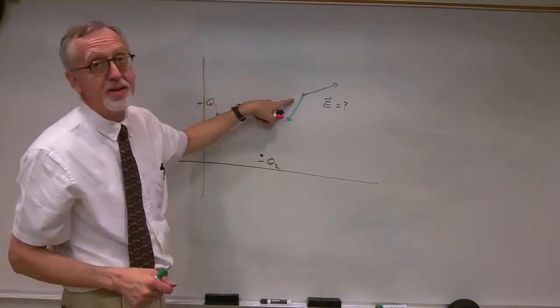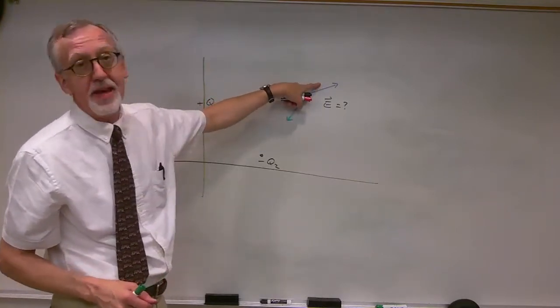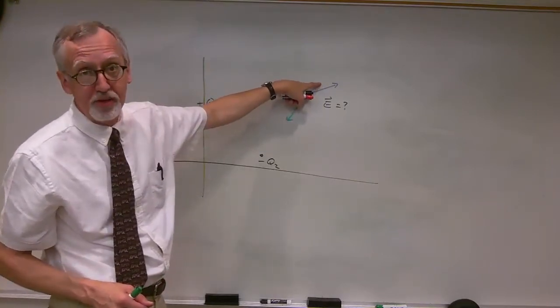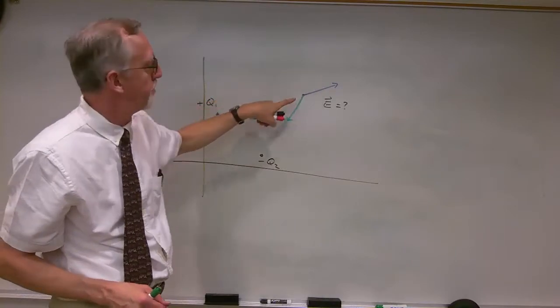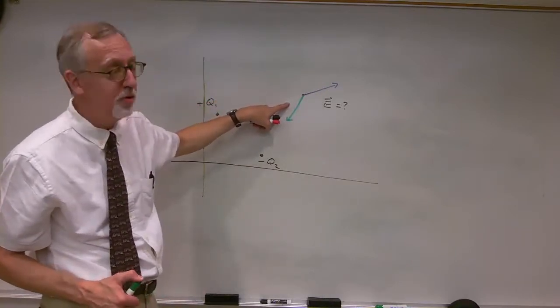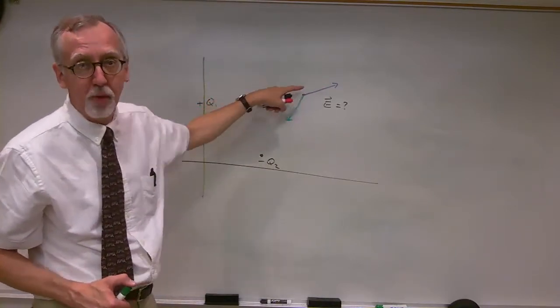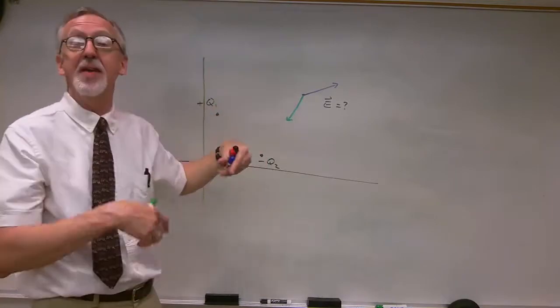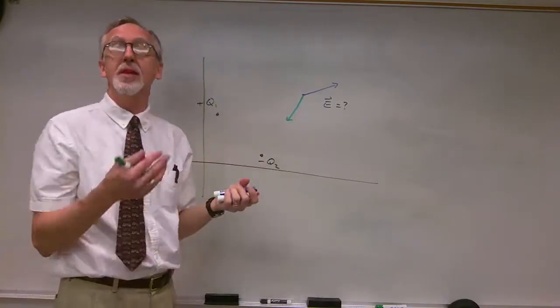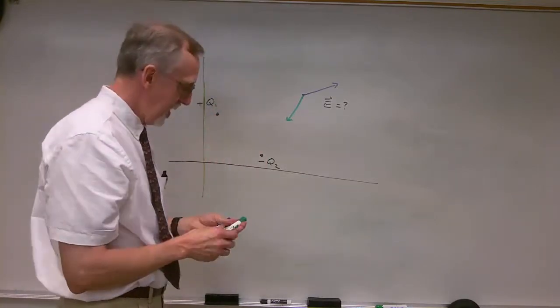We could do that quantitatively by finding the X and Y components of E1, finding the X and Y components of E2, combining the X components, combining the Y components, and that would give you the X and Y components of the sum.